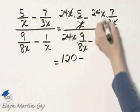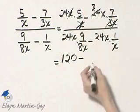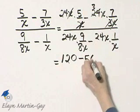Minus the x's divide out, and 3 divides into 24 eight times. And I have 8 times 7, or 56.